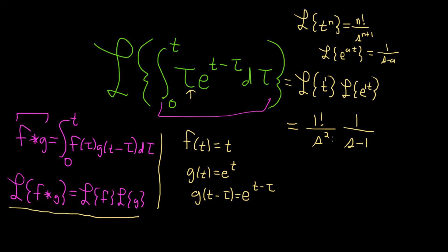The last thing to do is maybe rewrite this. 1 factorial is 1, and 1 times 1 is 1. So we end up with 1 up top, and then s squared times s minus 1 on the bottom. And that would be the final answer.